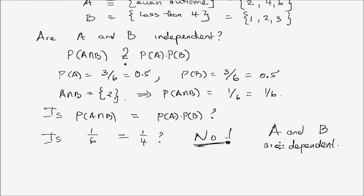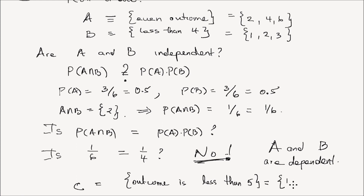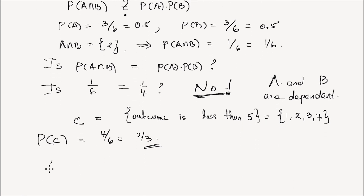Let's do another example. Define another event C in the same experiment where you're again rolling a die. A is even outcomes, B is less than four, and C is the outcome is less than five. That set contains {1, 2, 3, 4} — it has four elements. So the probability of C is equal to four divided by six, which is two-thirds. Are events A and C independent?